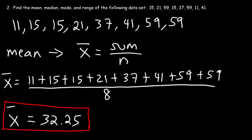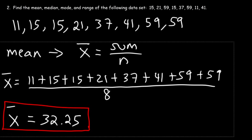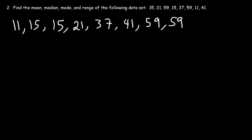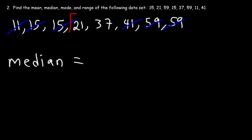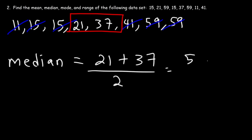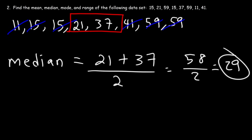Now let's calculate the median. The median is the middle number, so let's eliminate the first and last numbers, then the next two and the next two. Notice that we don't have one number in the middle this time — we have two numbers in the middle. In this case, take the average of those two middle numbers: add them up and divide by two. 21 plus 37 is 58, and 58 divided by 2 gives 29. So 29 is the median.